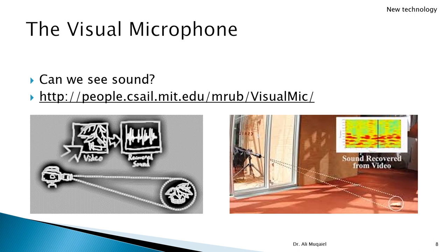To conclude, as an example of amazing technology — not part of the textbook — some researchers developed what is called the 'visual microphone.' They use a very high resolution camera to capture sound through the vibration on objects. Imagine someone speaking behind a soundproof window: the only thing available is a camera that can capture tiny variations on a plastic bag or plant caused by sound reflections from the people speaking inside.